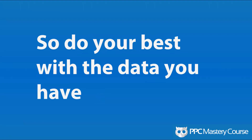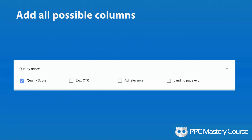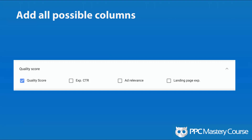We shouldn't rely just on quality score. Google did put out an announcement that they have additional columns available. There are different quality score columns in the new interface: you can add Quality Score, Expected CTR, Ad Relevance, and Landing Page Experience. So for the same account and same keywords, I'm adding those columns as well.